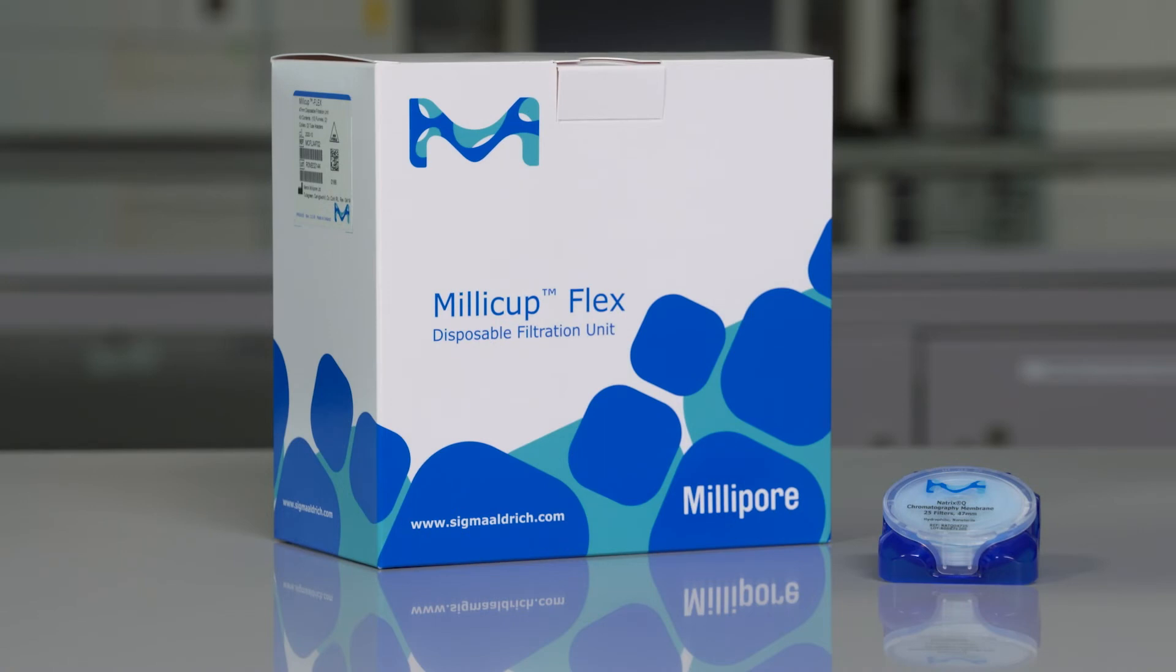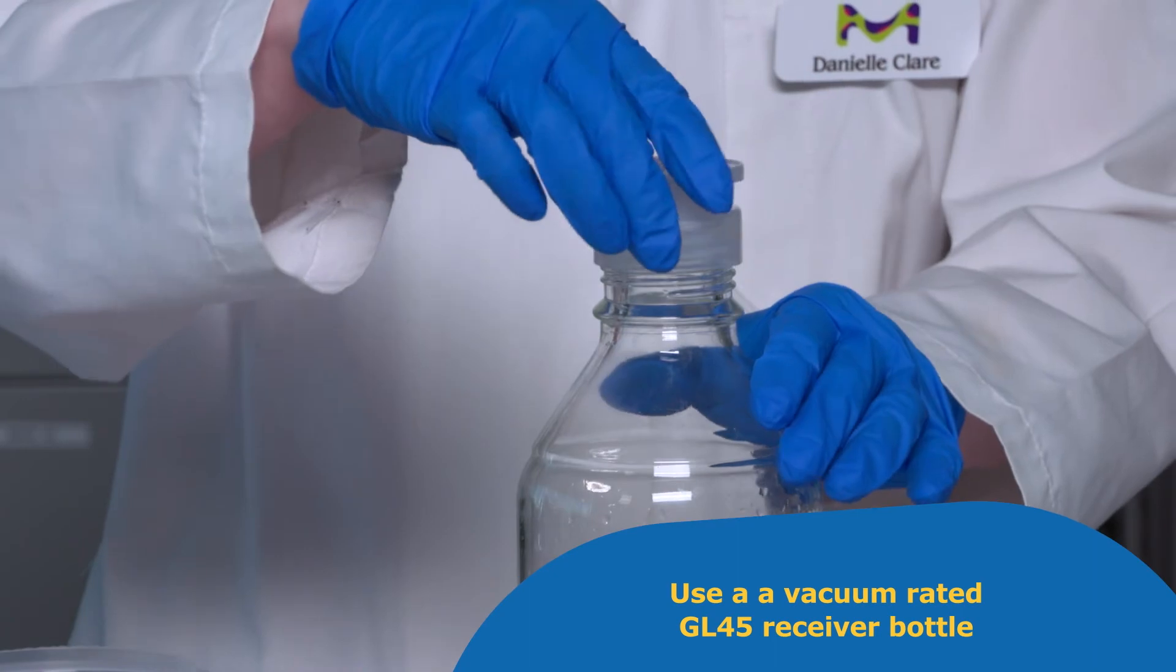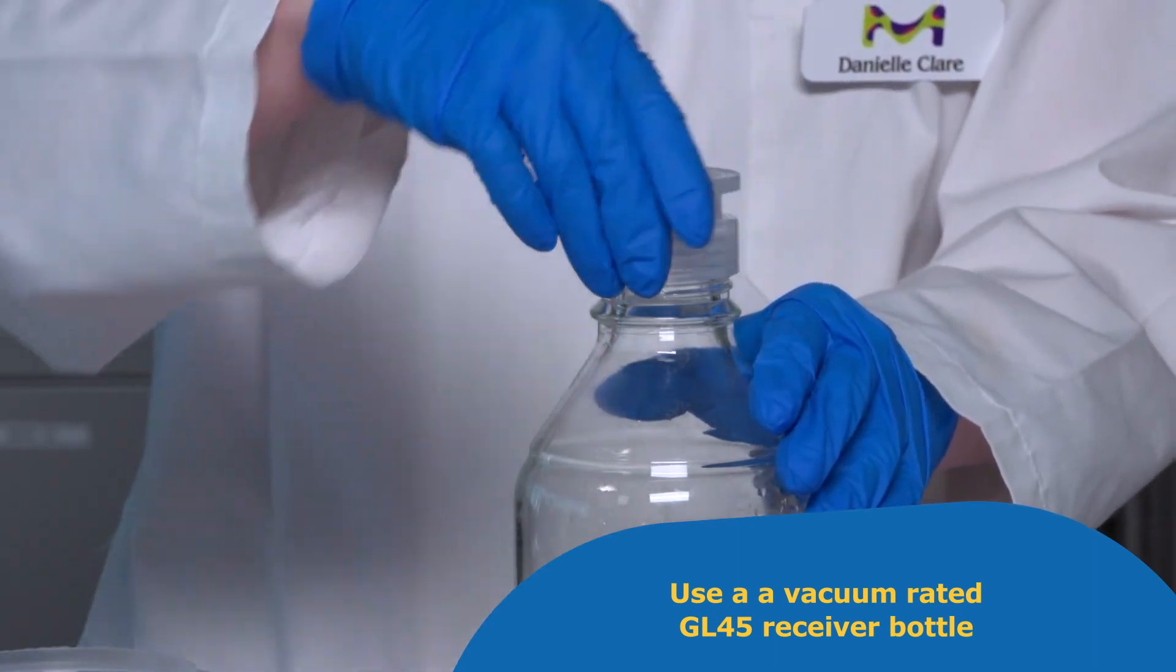The Millicup Flex can be used for batch filtration and clarification of buffers and solvents quickly and easily. Screw the threaded membrane support to a vacuum-rated GL45 receiver bottle until tight.